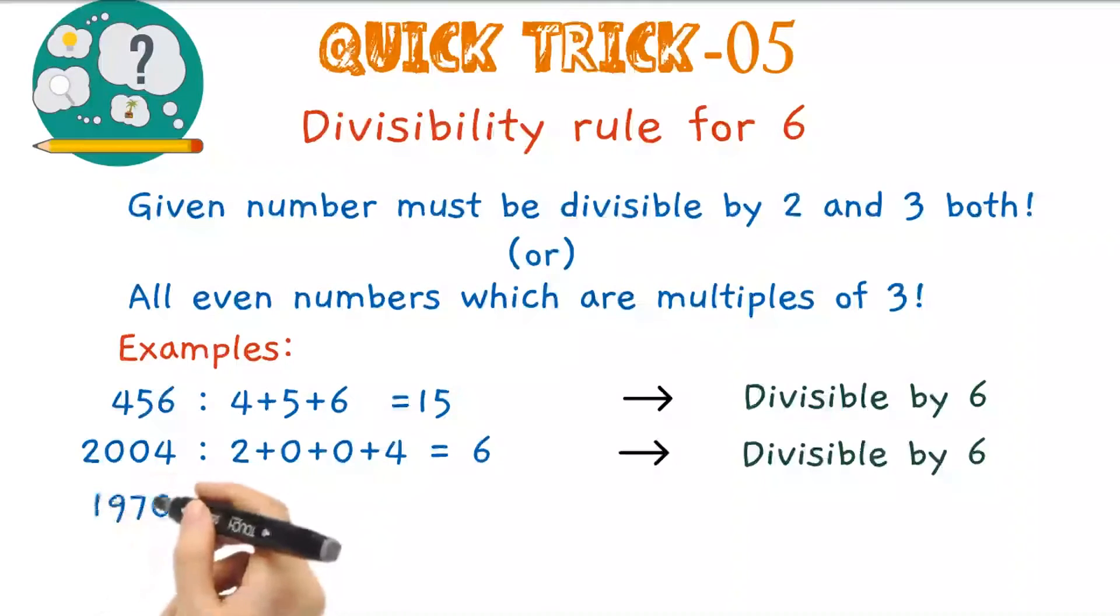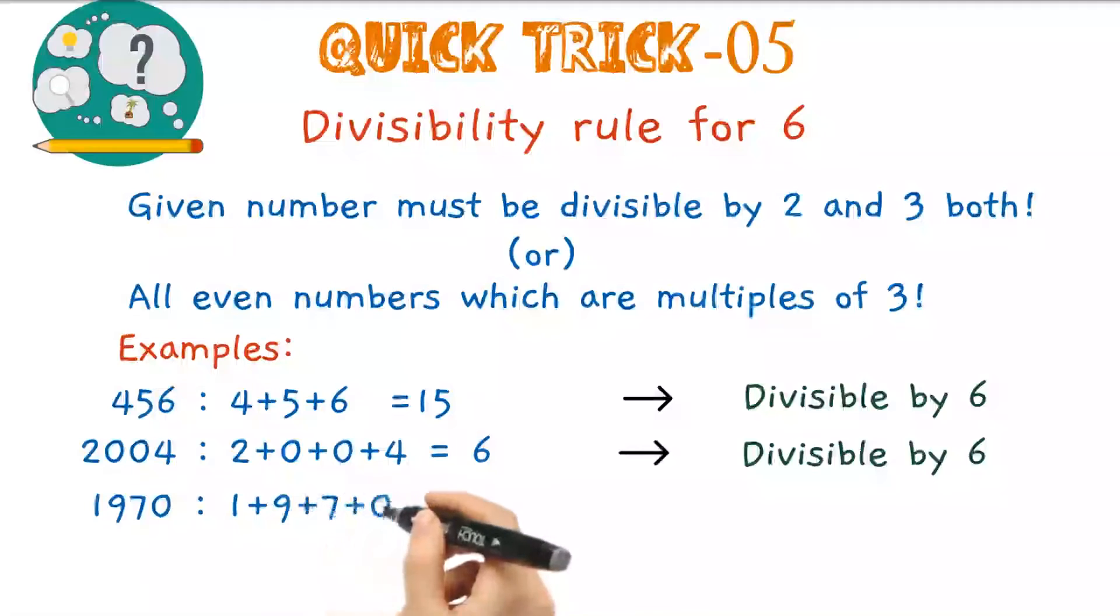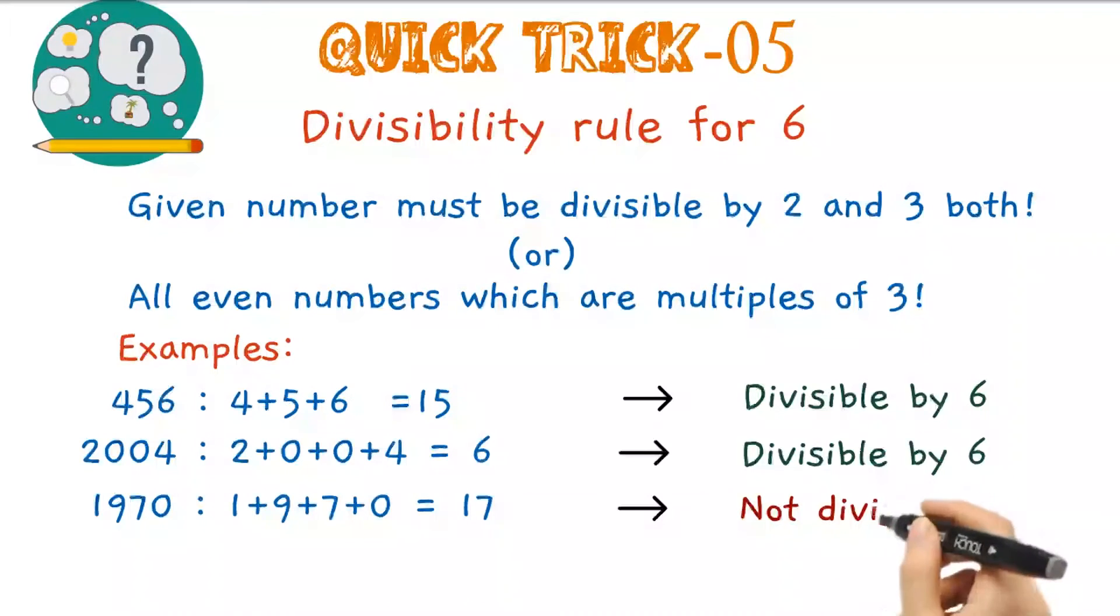Next number is 1970. Though it is an even number, sum of the digits is equal to 17, which is not a multiple of 3. Thus, the given number is not divisible by 6.